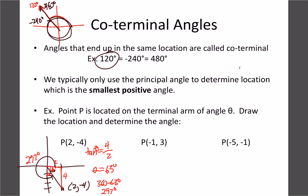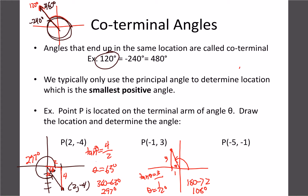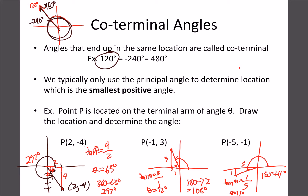For the next coordinate, drawing the triangle gives us 1 over and 3 up. So tan theta equals 3 over 1, and inverse tan of 3 over 1 gives us approximately 72 degrees. Since that's in the second quadrant, the angle is 180 minus 72, which gives us 108 degrees. For the last one, we're going 5 left and 1 down, so inverse tan of 1/5 gives about 11 degrees. Since that's in the third quadrant, we do 180 plus 11, giving us 191 degrees.